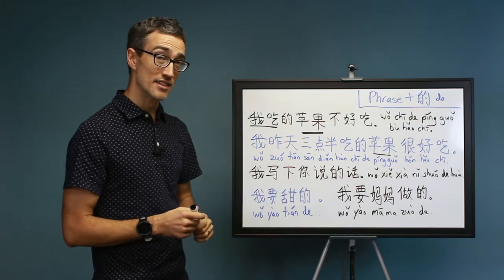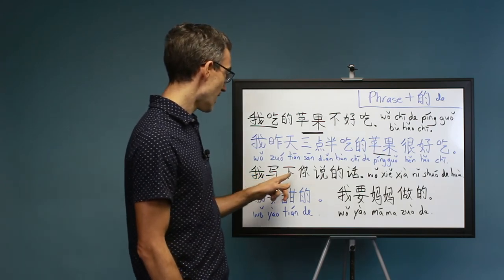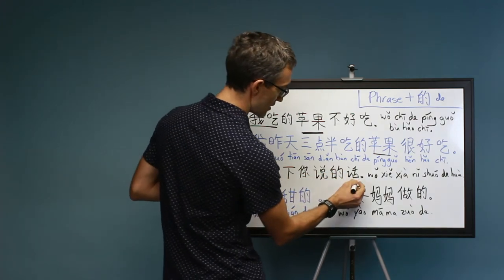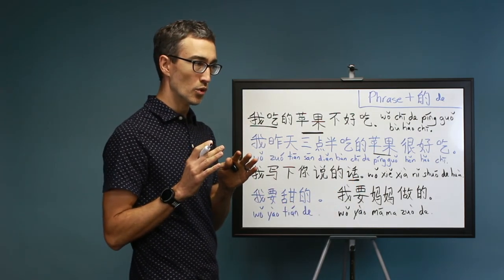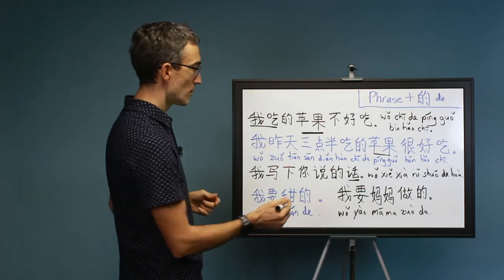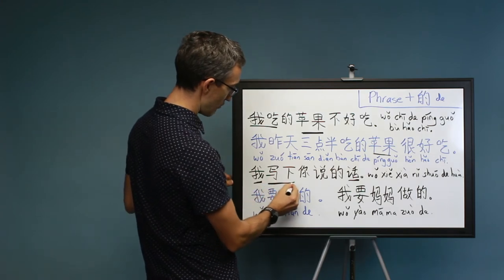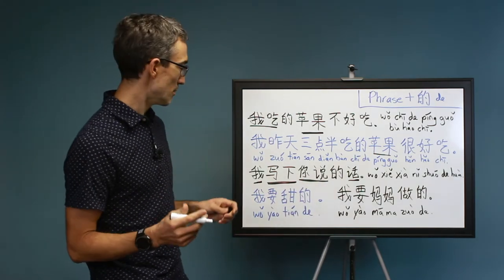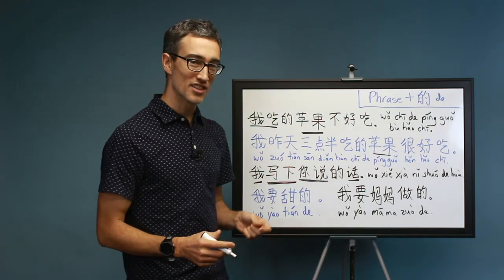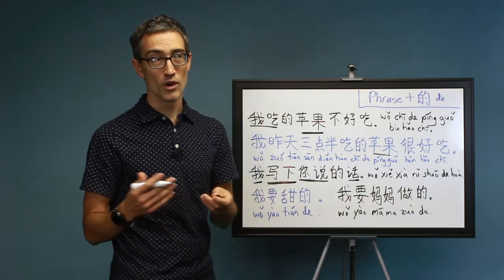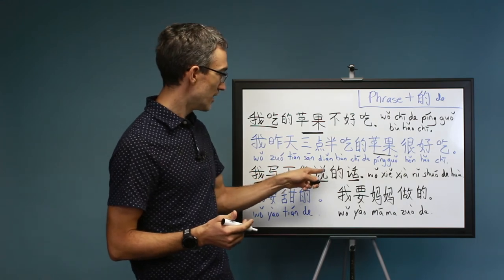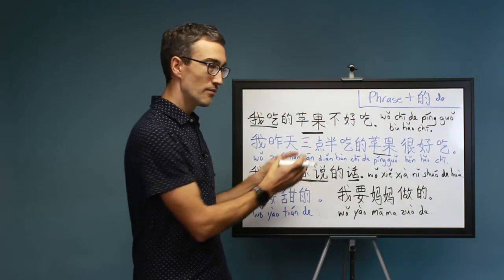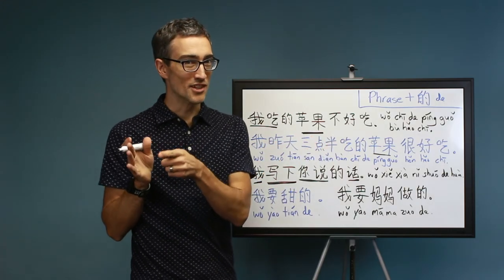Here's another example with the noun at the end of the sentence. It's an object of the sentence, not the subject. Wo xie xia ni shuo de hua. This means I write down your, you speak de hua. Hua is the noun, is the object right here. It means your words or what you're saying. The subject is I, the verb is xie xia, write down. And then the adjective phrase here is ni shuo, you speak, or you say. I will write down the words that you're saying. Or in English, you would say what you're saying. But I'm writing down ni shuo de hua. I'm going to write down the words that you are saying. But in Chinese, it's not the words that you are saying. It's ni shuo, you say, de hua. What hua? The ones that you're saying.